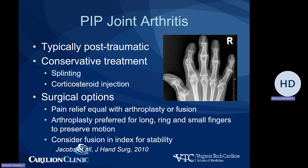Moving proximally to the PIP joint, this is not as commonly affected by primary osteoarthritis. There is a higher chance of it being post-traumatic or occurring in the context of a systemic inflammatory or autoimmune disease. Still, most cases of arthritis of the PIP joint are osteoarthritis. Conservative treatment consists of splinting and corticosteroid injection, with in general good but only temporary improvement. Surgical options include arthroplasty or fusion.